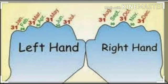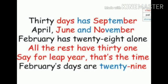Tau is tarah se, haam apne hands ko dekh ke, we can find out ki kis month mein kitne days hote hain. I remember the poem which we used to do in nursery: 30 days has September, April, June and November. February has 28 alone. All the rest have 31. Save for leap year — that's the time, February days are 29.